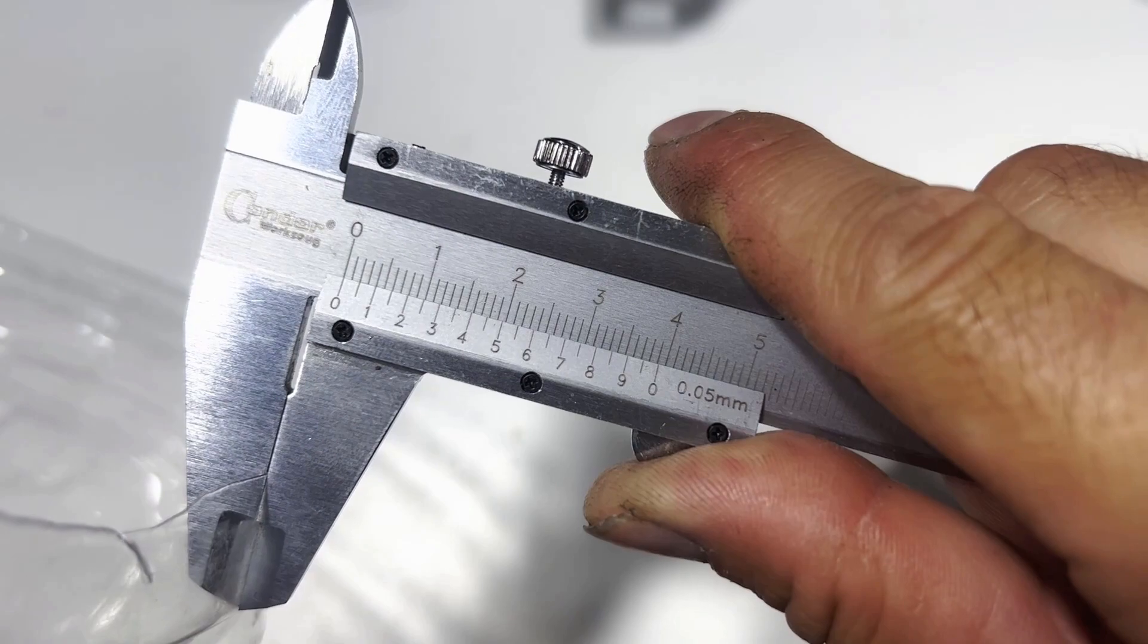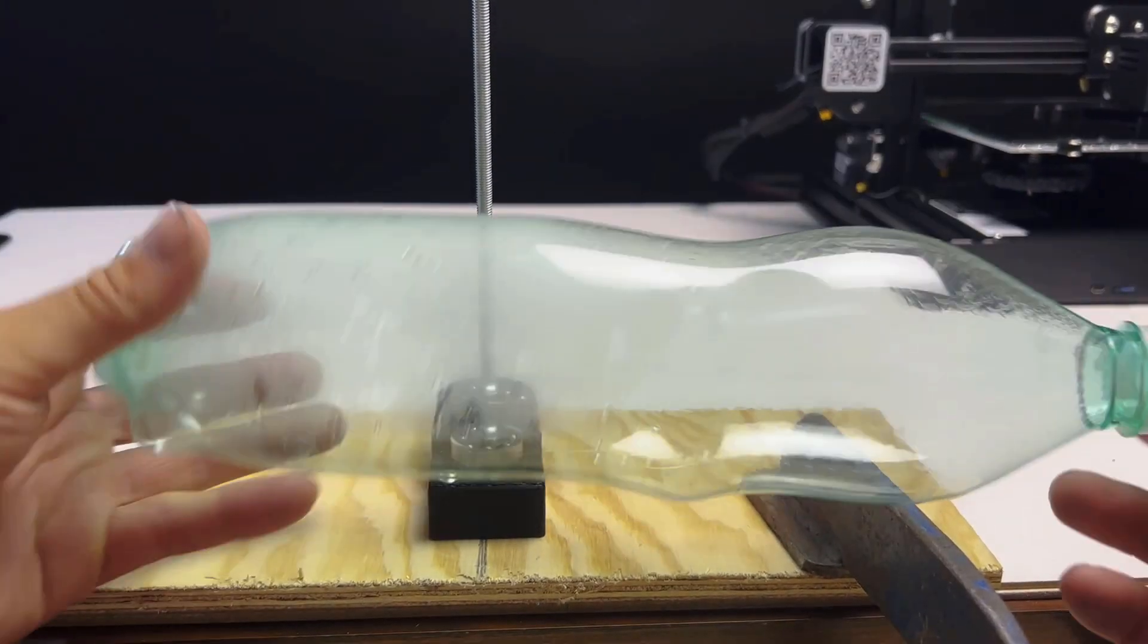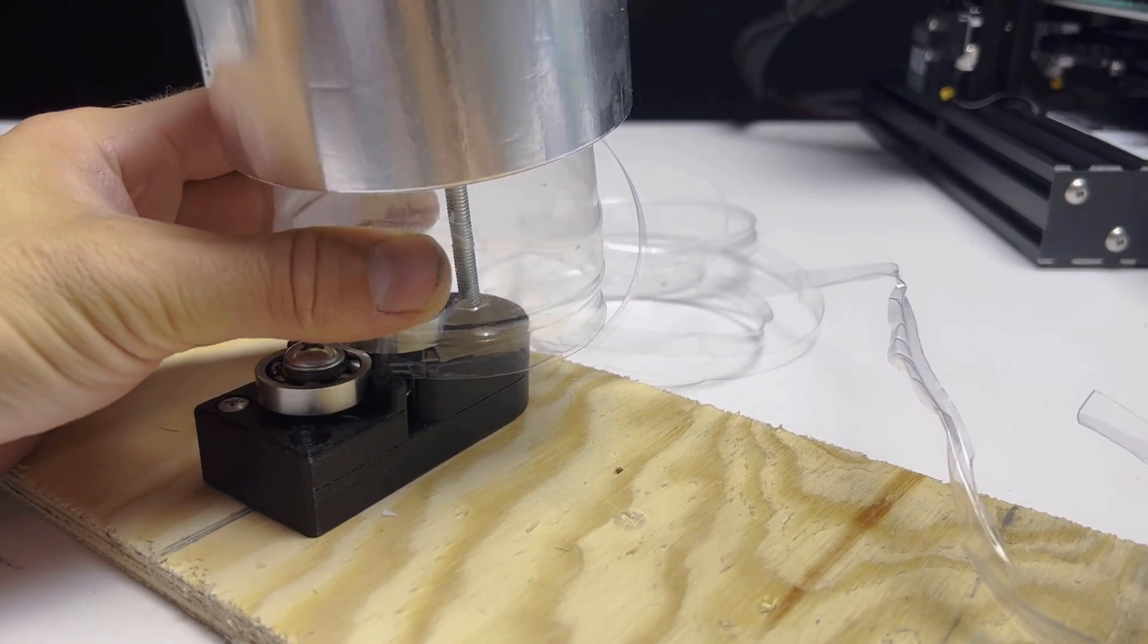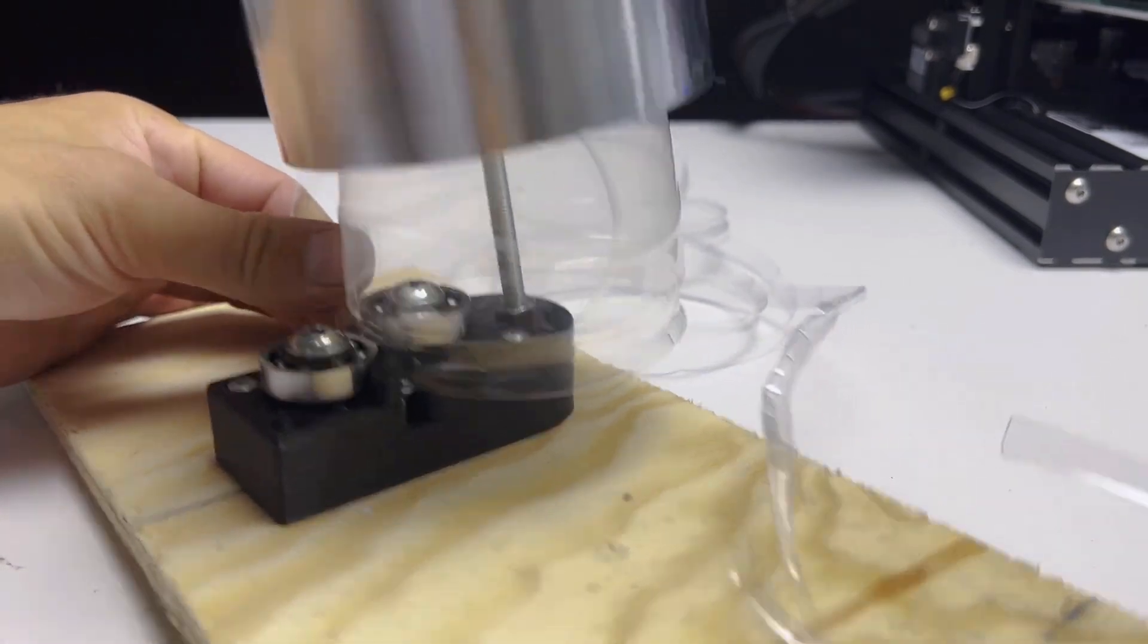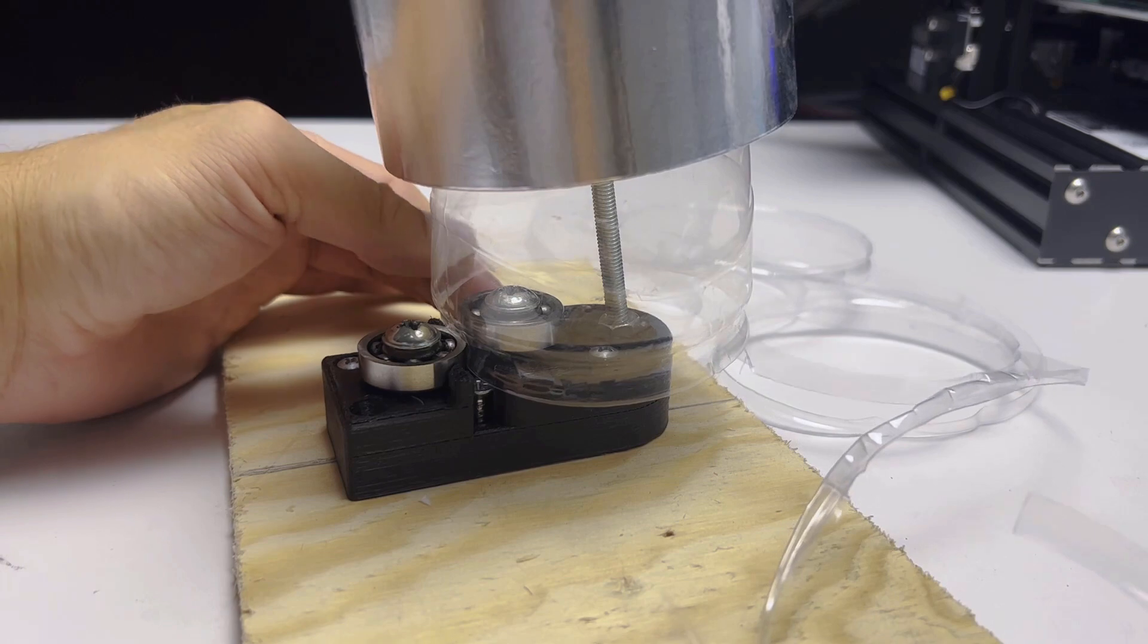Yet another problem emerges: the change in wall thickness. Blowing the bottle might cause the wall thickness to change at that spot. Thus, these problems need solving, but we'll look into that in the next video. Thank you for watching and see you next time.